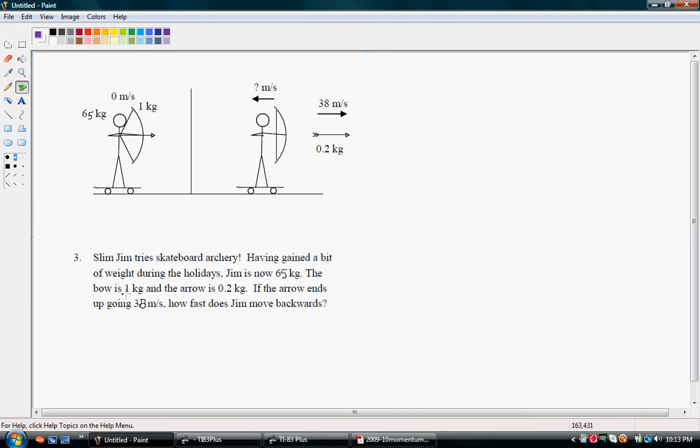And the bow is 1 kilogram and the arrow is 0.2 kilograms. If the arrow ends up going 38 meters per second, how fast does Jim move backwards?